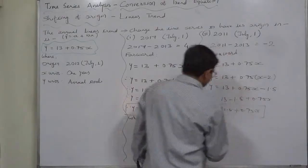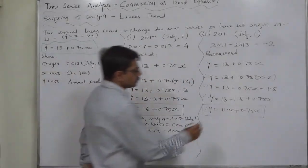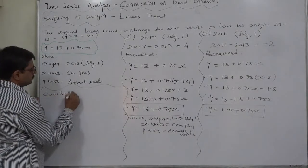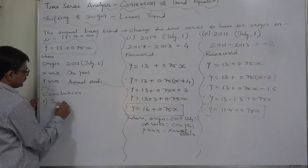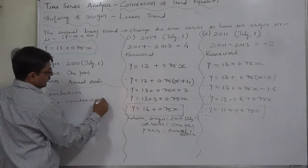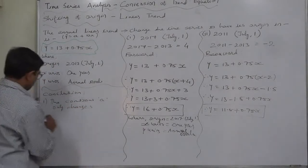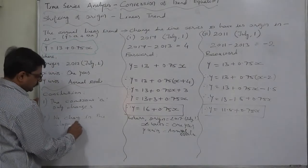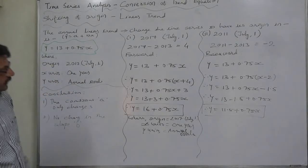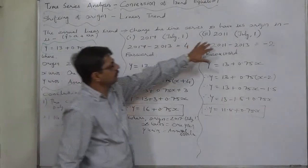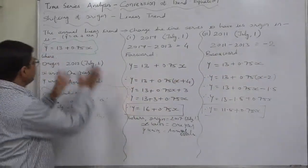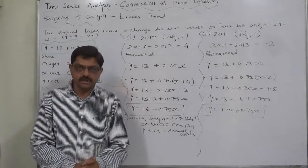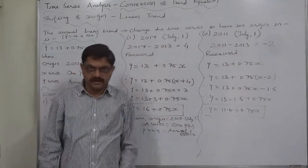Again the observation is: there is change in the value of constant a only, and not in the slope b. So the conclusion is: number one, the constant a only changes, and number two, there is no change in the slope b. This is the common broad conclusion. If you take any other year or month to change the origin of the same trend, the same conclusion will hold. In the next lecture we are going to discuss shifting of origin in case of non-linear trend. Thank you very much.